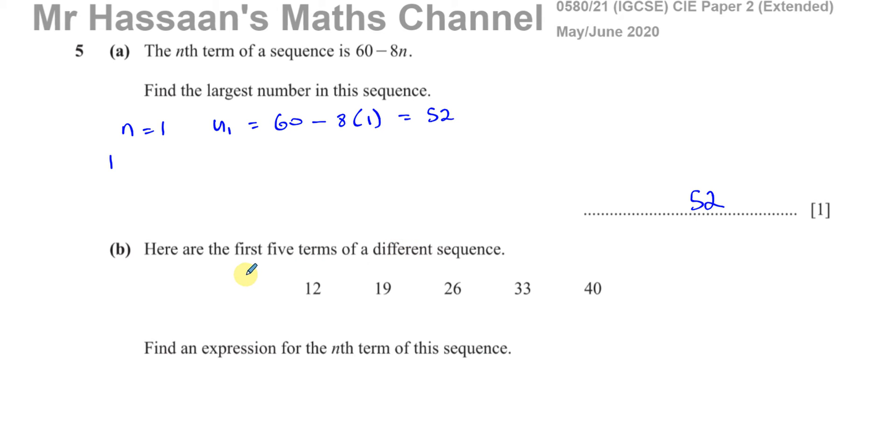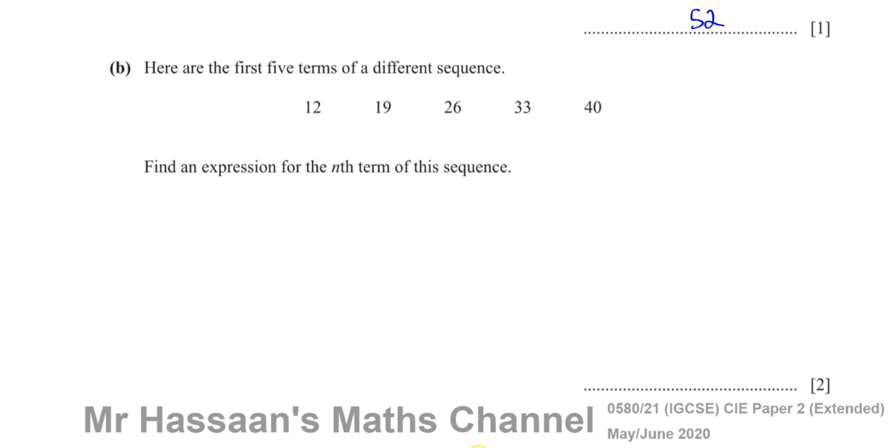Then it says, here are the first five terms of a different sequence: 12, 19, 26, 33, 40. Find expression for the nth term of this sequence. So for this question here, what we need to do is we need to see how the sequence is changing from term to term. Let's see how it changes. You've got to add seven and then you've got to add seven again, and then you've got to add seven again, and then you've got to add seven again. So we can see that it's increasing by seven each time.